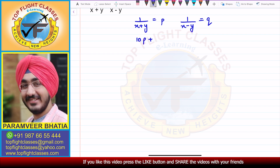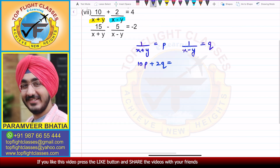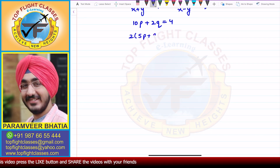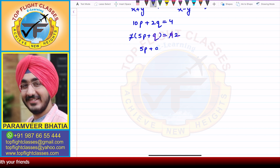Taking 2 as common from 10P + 2Q = 4, we get 5P + Q = 2. The 2 cancels out and we get 5P + Q = 2. This is the first equation.